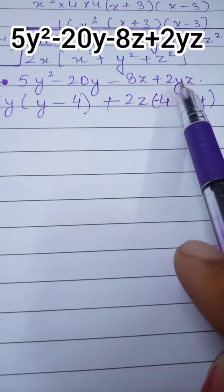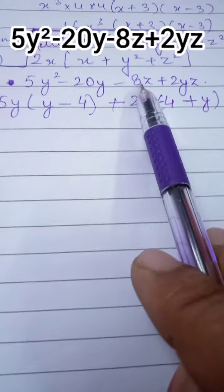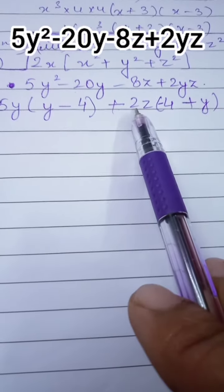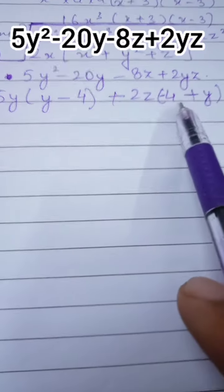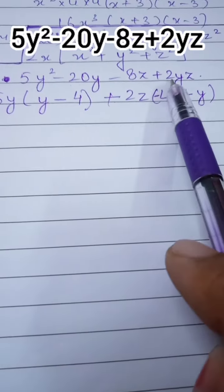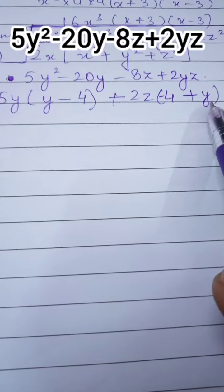Take 2z as common, then inside the bracket we have minus 4. Then this plus 2z is outside the bracket, so y is remaining.